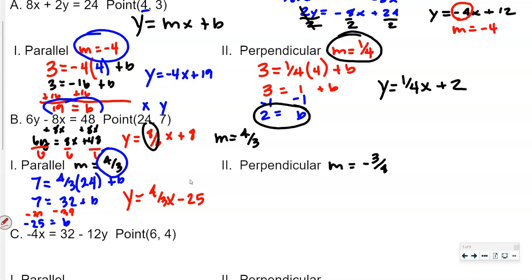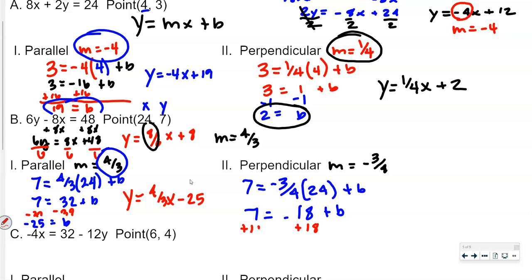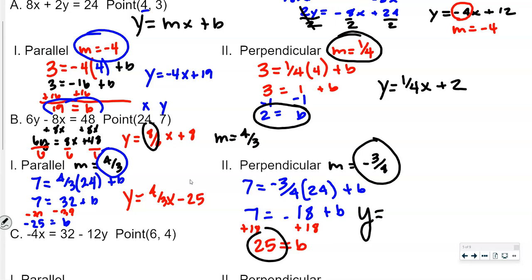Same process for the perpendicular line. We have 7 equals negative 3 fourths times 24, plus b. Negative 3 fourths times 24 is negative 18, so 7 equals negative 18 plus b. Adding 18 to both sides gives b equals positive 25. So the perpendicular line equation is y equals negative 3 fourths x plus 25.